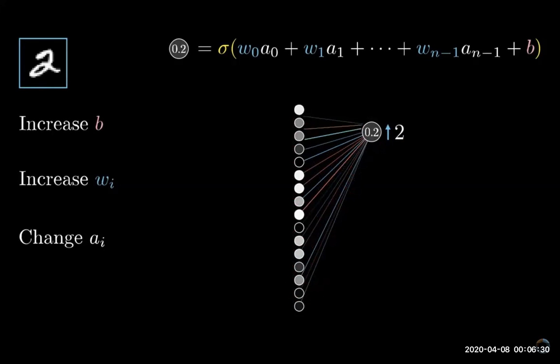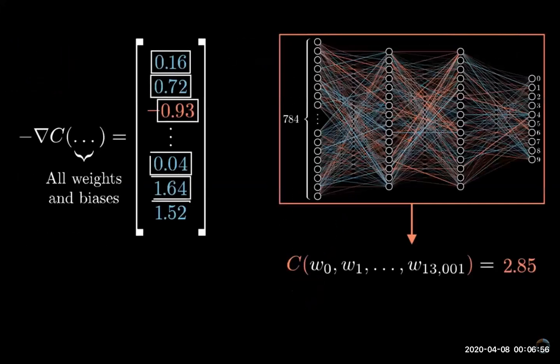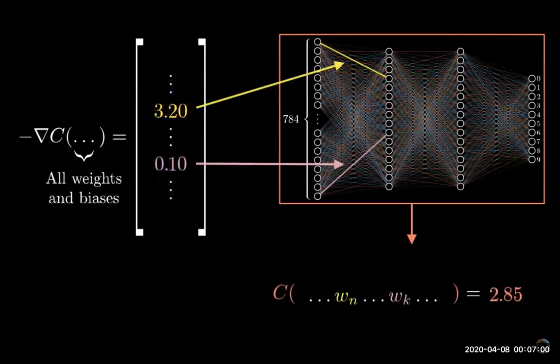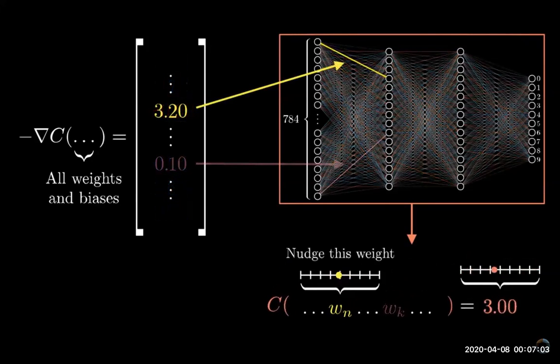There are three different avenues that can team up together to help increase that activation: you can increase the bias, increase the weights, and change the activations from the previous layer. Notice how the weights actually have differing levels of influence. The connections with the brightest neurons from the preceding layer have the biggest effect since those weights are multiplied by larger activation values. This is at least somewhat reminiscent of a theory in neuroscience.